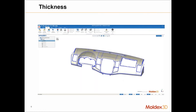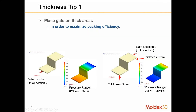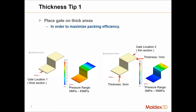Let's take a look at thickness. It is very important to understand the part thickness, because material prefers to flow to the thick area — thick areas are easier to flow through, while thin areas are harder. For example, gating in a thick area requires only 83 MPa to fill the part, but gating from a thin area requires significantly more pressure. That's why most of the time we prefer to put the gate in a thick area.